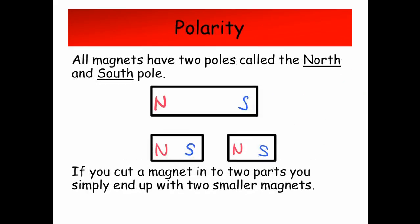Polarity. All magnets have two poles called the north and south pole. If you cut a magnet in two parts, you will simply end up with two smaller magnets.